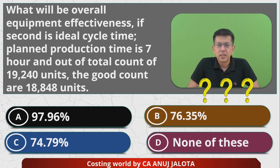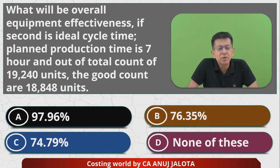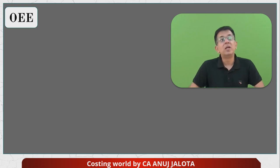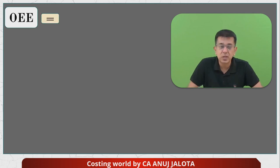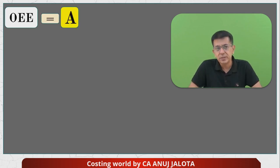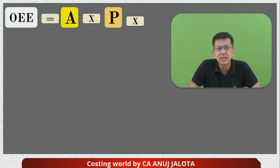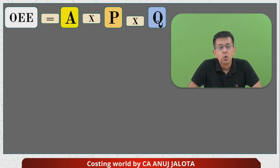Now, if you want to find out OEE, it comprises three ratios multiplied together. The first ratio is availability (A), the second is productivity, performance, or efficiency ratio (P), and lastly, the quality ratio (Q).